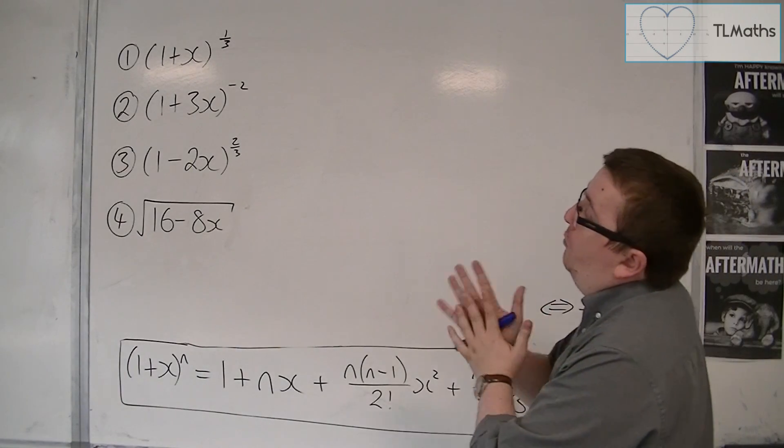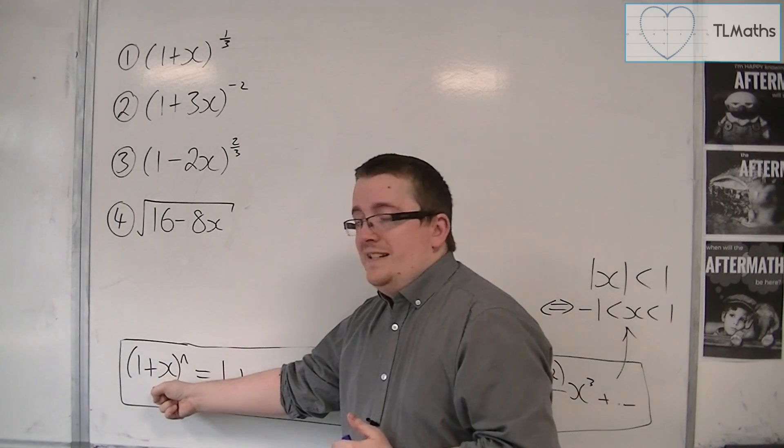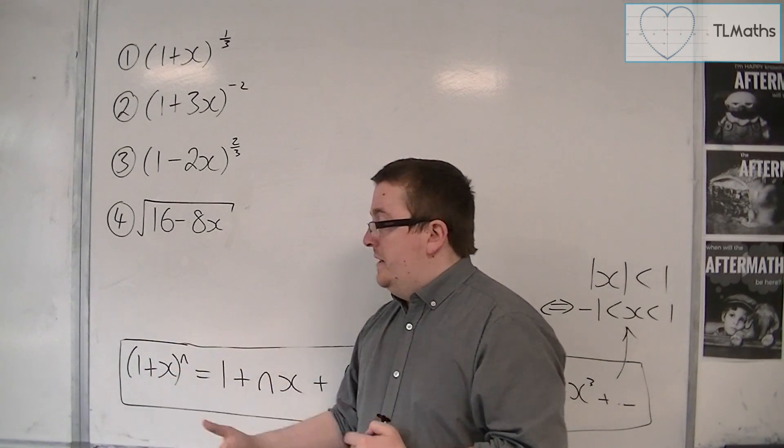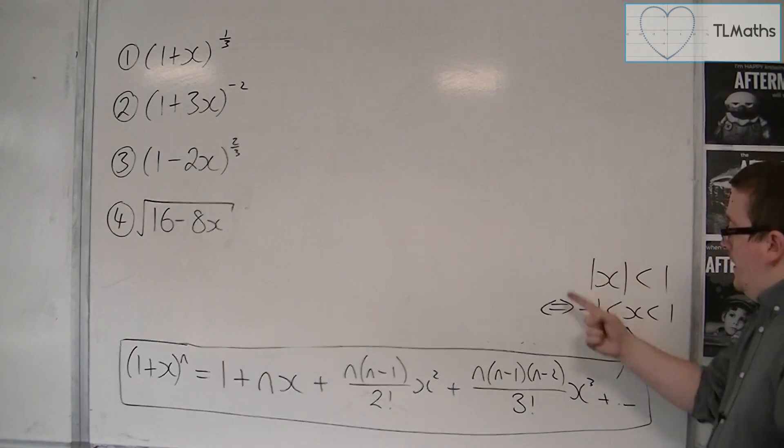So if we look at the first one, 1 plus x to the 1 third, it looks almost exactly the same as this, except that n is 1 third. And as you can see by this, n doesn't come into the picture here.